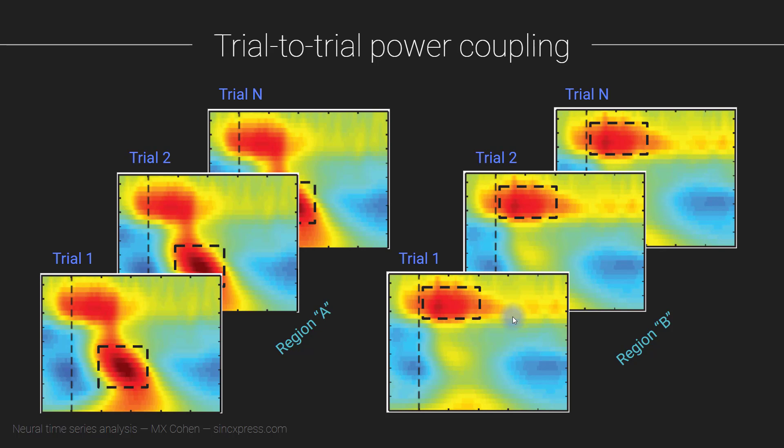And you'll have to worry about multiple comparisons corrections and it might be difficult to interpret. So as with my recommendation for the previous analysis, the amplitude envelope correlations, if you are using this method—it's a pretty neat method—then you will need to come up with some theoretically motivated ways of restricting yourself to specific a priori windows that are hypothesis-driven and that are feasible to test.